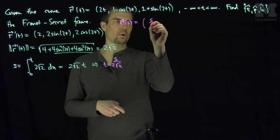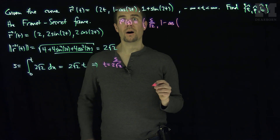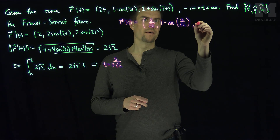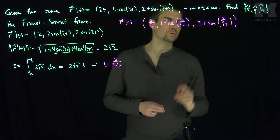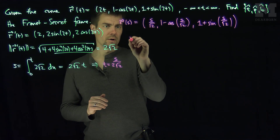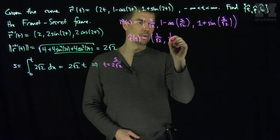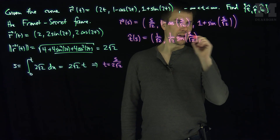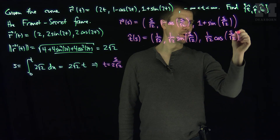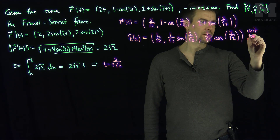Our curve in arc-length parameter is: 2 · (s / 2√2) = s/√2 for the first component; then 1 − cos(s/√2) for the second; and 1 + sin(s/√2) for the third. The derivative of the curve in arc-length parameter is the unit tangent vector. So T-hat(s) = (1/√2, (1/√2)sin(s/√2), (1/√2)cos(s/√2)). That is our unit tangent vector.